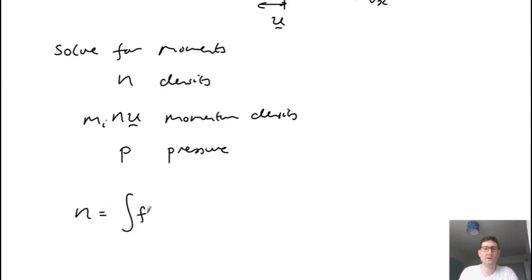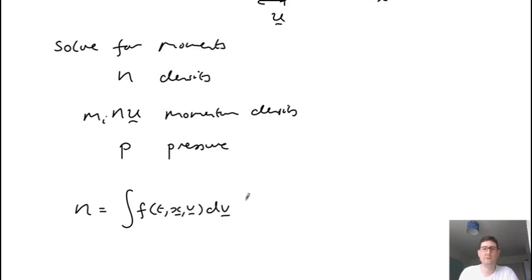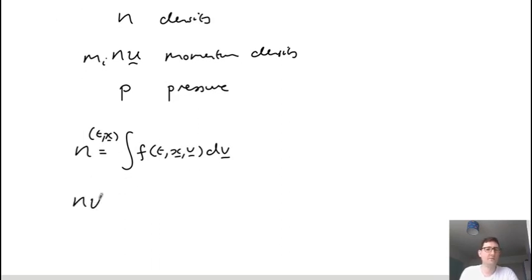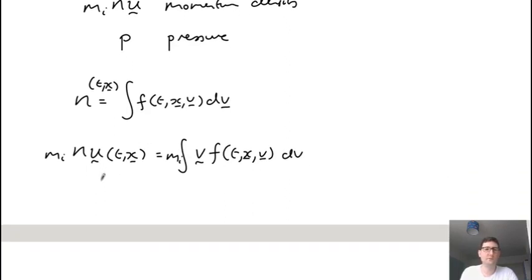If you have this f that's a function of t, x, and v, we're basically integrating over the velocity. N, for example, is just the integral of f(t, x, v) integrating over velocity. This density is now a function of just time and space. This now has just three dimensions plus time, rather than six and time. Similarly we can do M_I times N U, which is also just a function of time and space, and this we get by multiplying by V, which is the particle velocity, and then we need an ion mass.